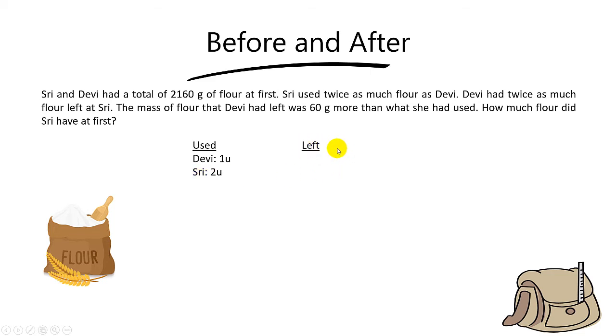And now let's focus on leftover. The question says that the mass of flour that Debbie had left was 60 grams more than what she has used. So the leftover for Debbie will be one unit plus 60. Understand? Because it's 60 grams more than what she has used. So the leftover will be one unit plus 60.